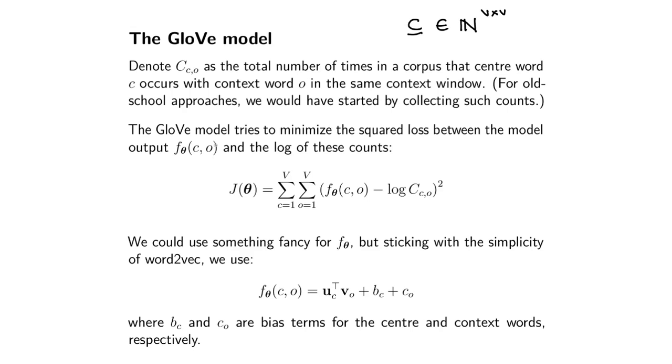What GloVe does is it tries to minimize the squared loss between some model output and the log of these counts. We're going to have a little model where we give it center word and context word, and that model tries to predict the log of these counts.